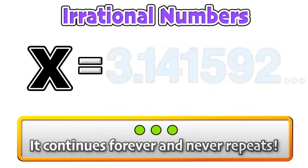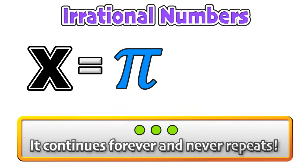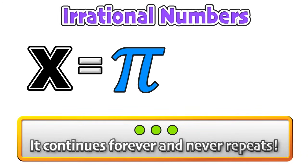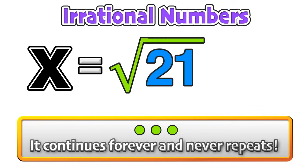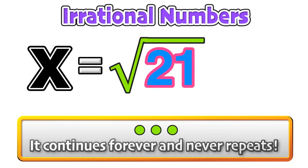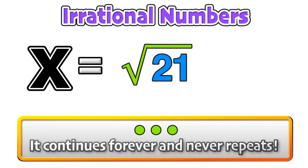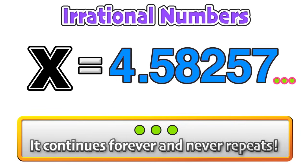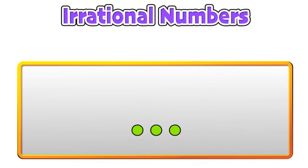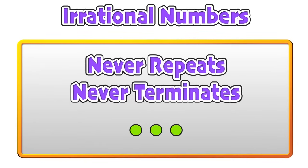This is implied by the dot dot dot notation at the end of a value. This value may look familiar — it is the first 7 digits in pi, which we know is an irrational number. Now we can look at the square root of 21. We know that 21 is not a perfect square, so this will not work out to some clean value. Evaluated, it is a number that continues forever and never repeats, so the square root of any non-perfect square is an irrational number.